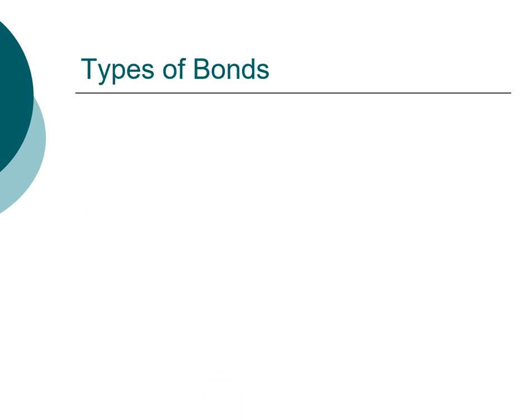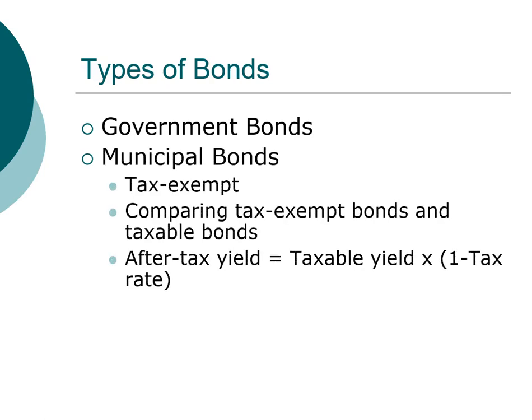Looking at who issues bonds: the U.S. government is by far the largest issuer. Government bonds can be direct Treasury bonds — bonds directly issued by the U.S. government — or agency bonds, the largest of which is probably the Federal Housing Authority (FHA). Agency bonds are issued by an agency of the government but are not guaranteed by the government.